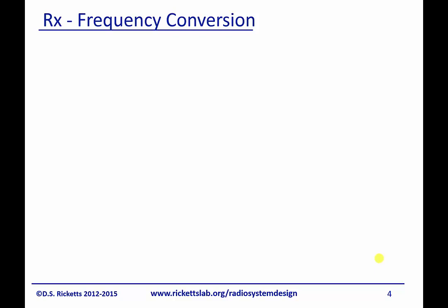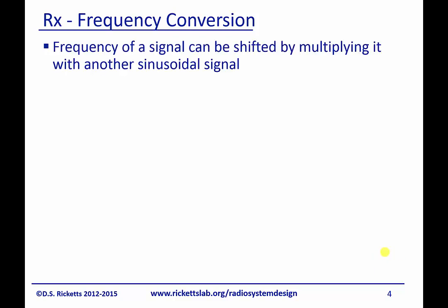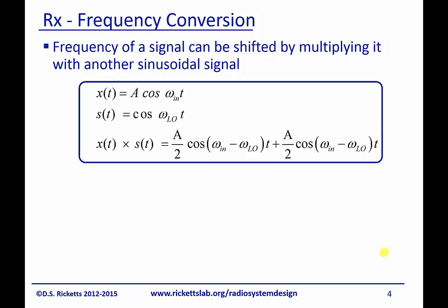Some other methods use frequency conversion. The frequency of a signal can be shifted by multiplying it with another sinusoidal signal — we've seen this in our transmitters many times. So we can take a signal, a cosine of ω_in times t, multiply it by a cosine of ω_LO times t, and we end up with the sum and the difference frequencies, as we've seen before for the transmitters.